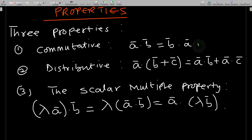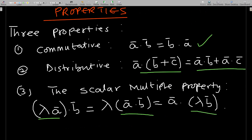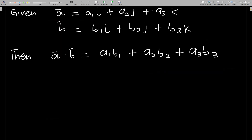Properties of the scalar dot product: first, it is commutative. Second, it is distributive over addition, so a dot (b + c) follows that rule. Third, the scalar multiple property: when a scalar multiplies one of the vectors and you dot with the other, the scalar can come out and you can multiply it to either vector before taking the dot product.